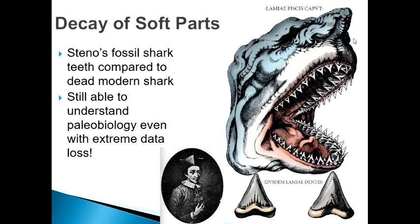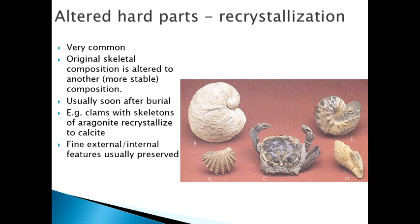If we think about the decay of soft parts, let's go back to Steno — Nicholas Steno. He was one of the first to recognize that the fossil shark teeth he could find in rocks in Italy were ultimately from an animal like the great white shark he dissected that was caught in the Mediterranean. He was one of the first to say that things from the rocks came from once-living creatures, and he recognized that if all he had were the teeth, all the soft parts of the shark had been destroyed — but he was still able to make paleobiological hypotheses with just those teeth.